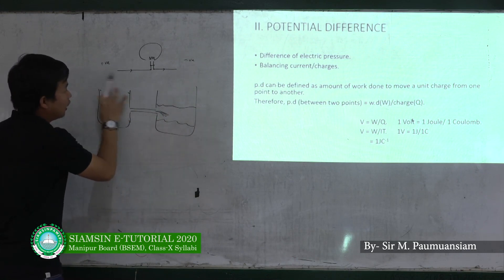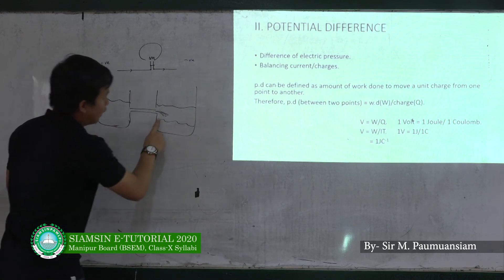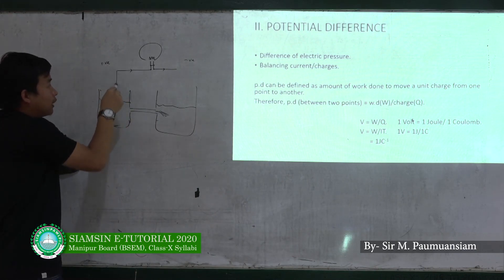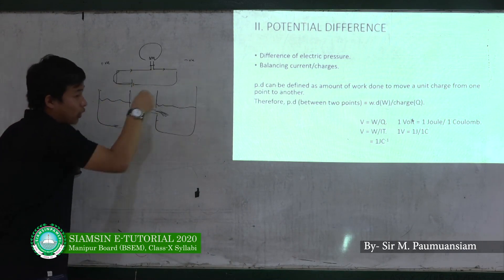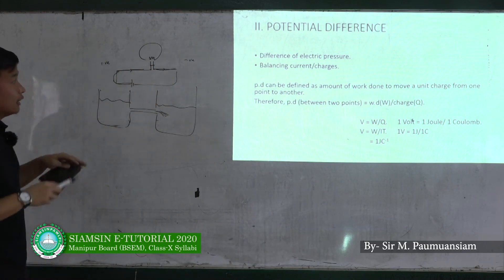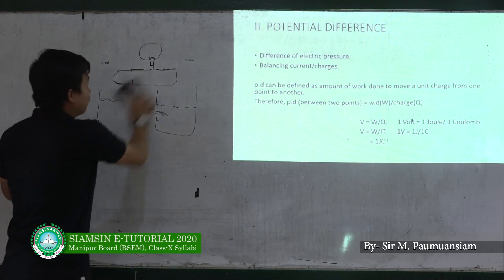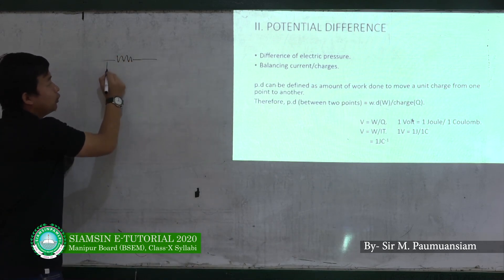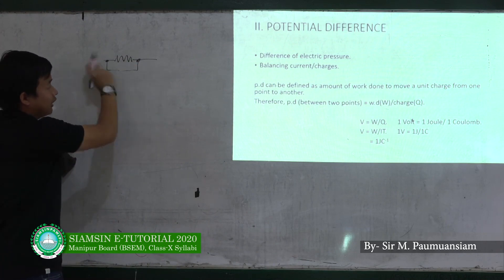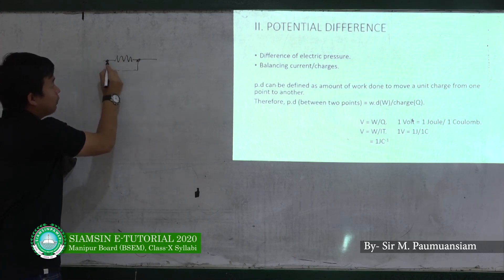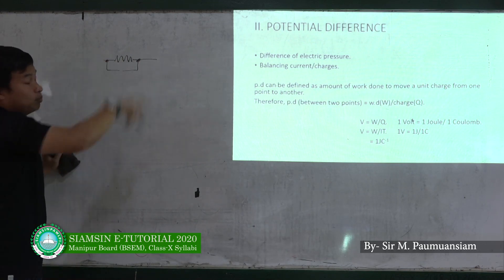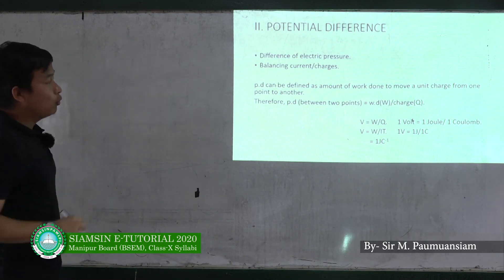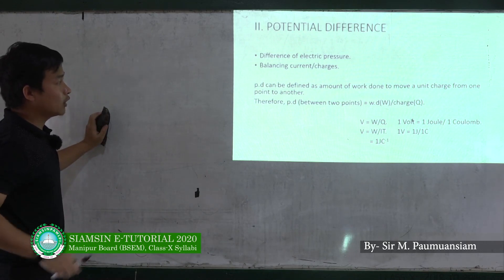If you have a potential difference, you can see the potential difference in the battery — the potential difference between two points. The potential difference can be defined as the amount of work done to move a unit charge from one point to another.